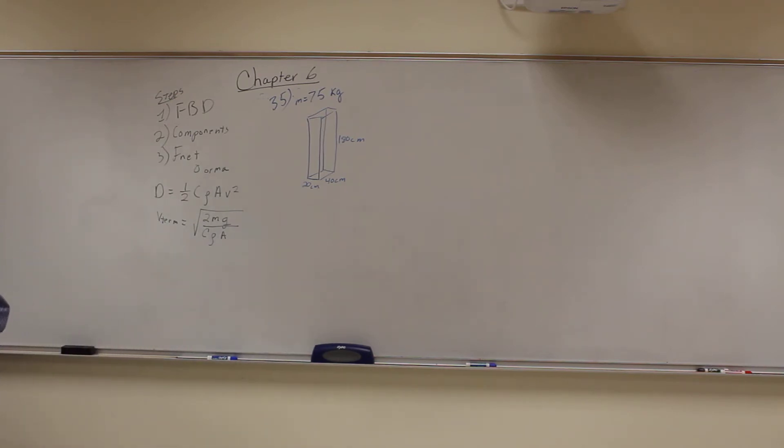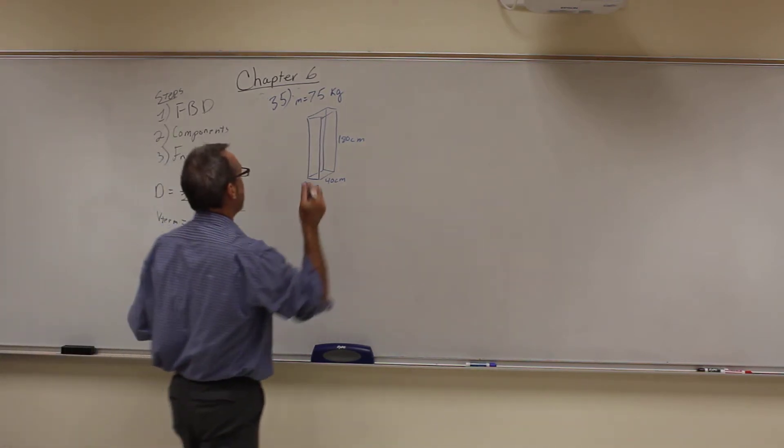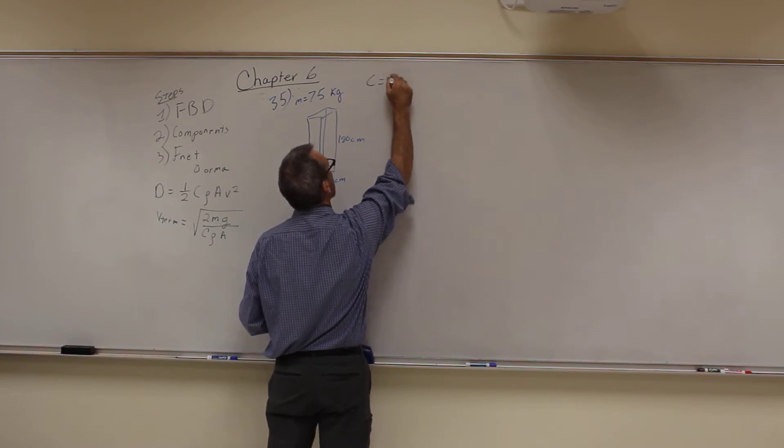The dimensions are 20 centimeters by 40 centimeters by 180 centimeters. We want to know what is his terminal speed if he falls feet first. Use 0.8 for the drag coefficient, so C is equal to 0.8.